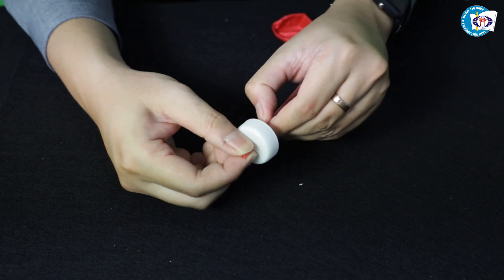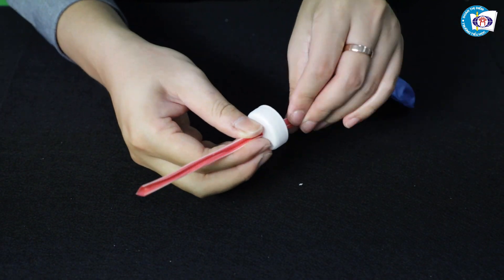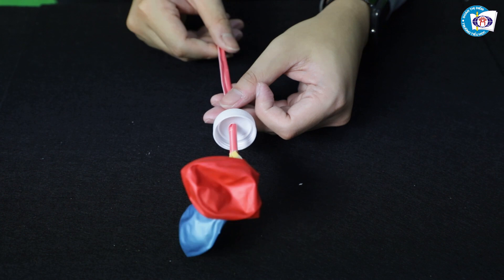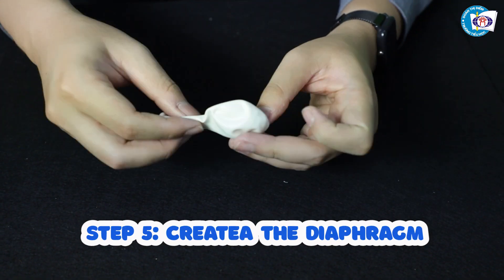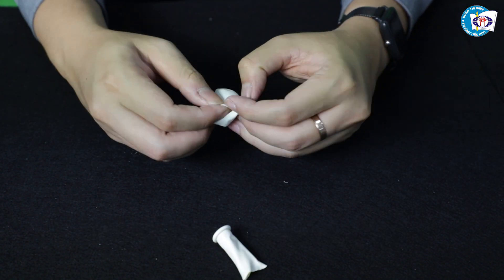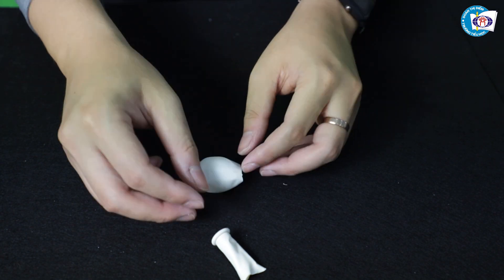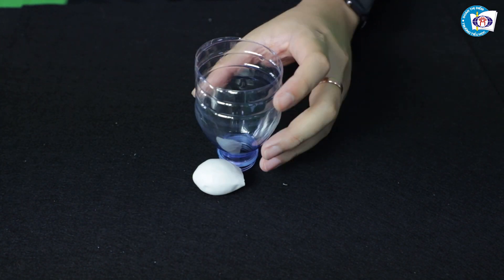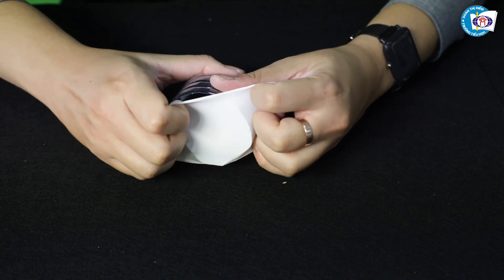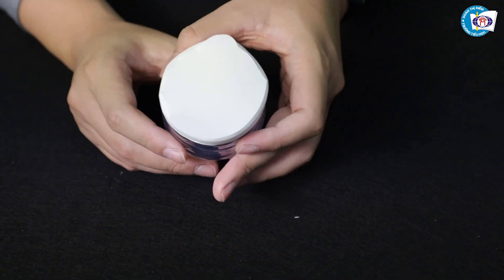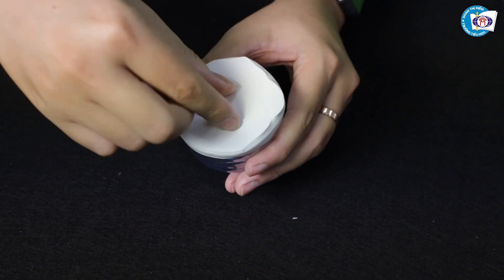Fold the tip of the straw and push through the hole on the bottle cap. Close the cap. Step 5: Get the other balloon and cut off the neck. Then use your hands to stretch the balloon over the wide opening of the bottle. Pull the middle of the balloon down to see if the balloon sticks to the bottle.